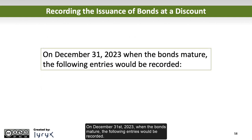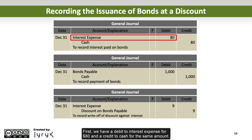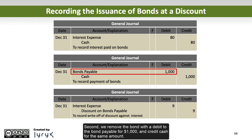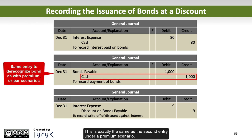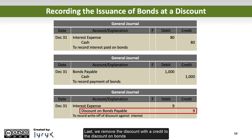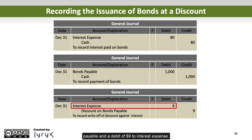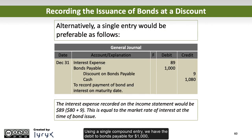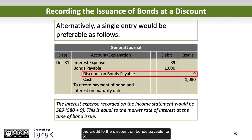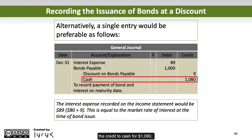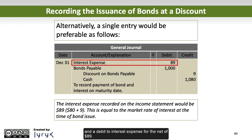On December 31, 2023, when the bonds mature, the following entries would be recorded. First, debit interest expense $80 and credit cash for the same amount. Second, remove the bond with a debit to bonds payable for $1,000 and credit cash for the same amount — this is exactly the same as the second entry under a premium scenario. Last, remove the discount with a credit to discount on bonds payable and a debit of $9 to interest expense. Using a single compound entry: debit bonds payable $1,000, credit discount on bonds payable $9, credit cash $1,080, and debit interest expense for the net of $89.